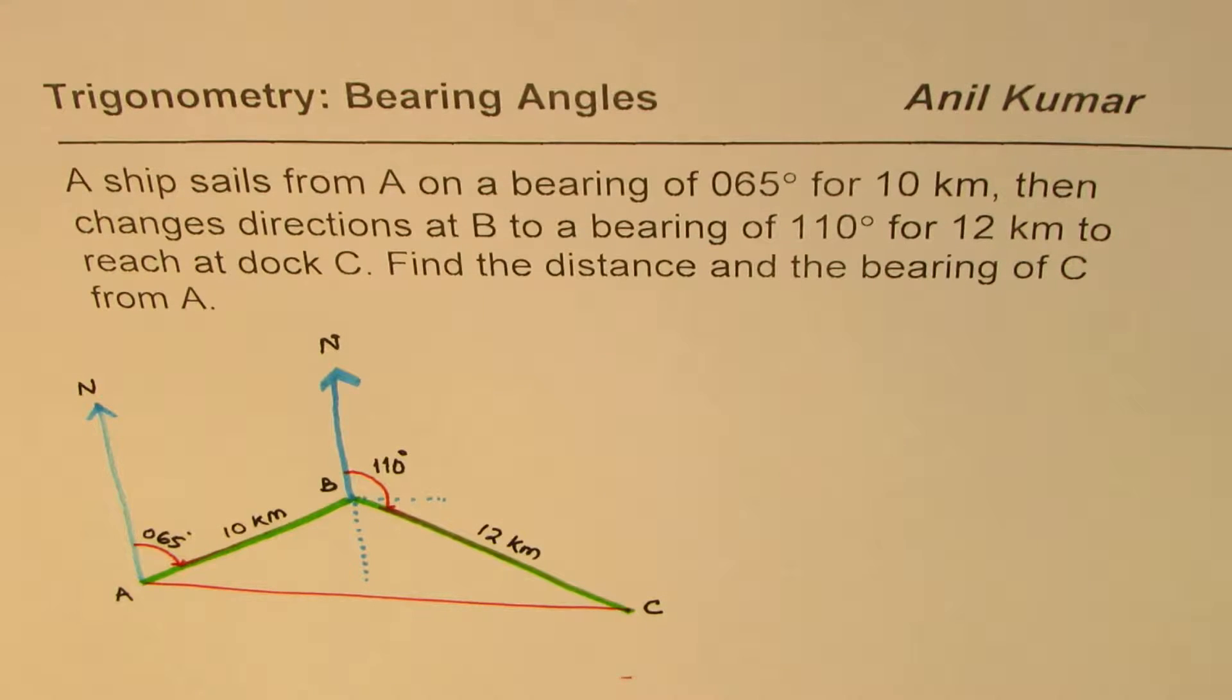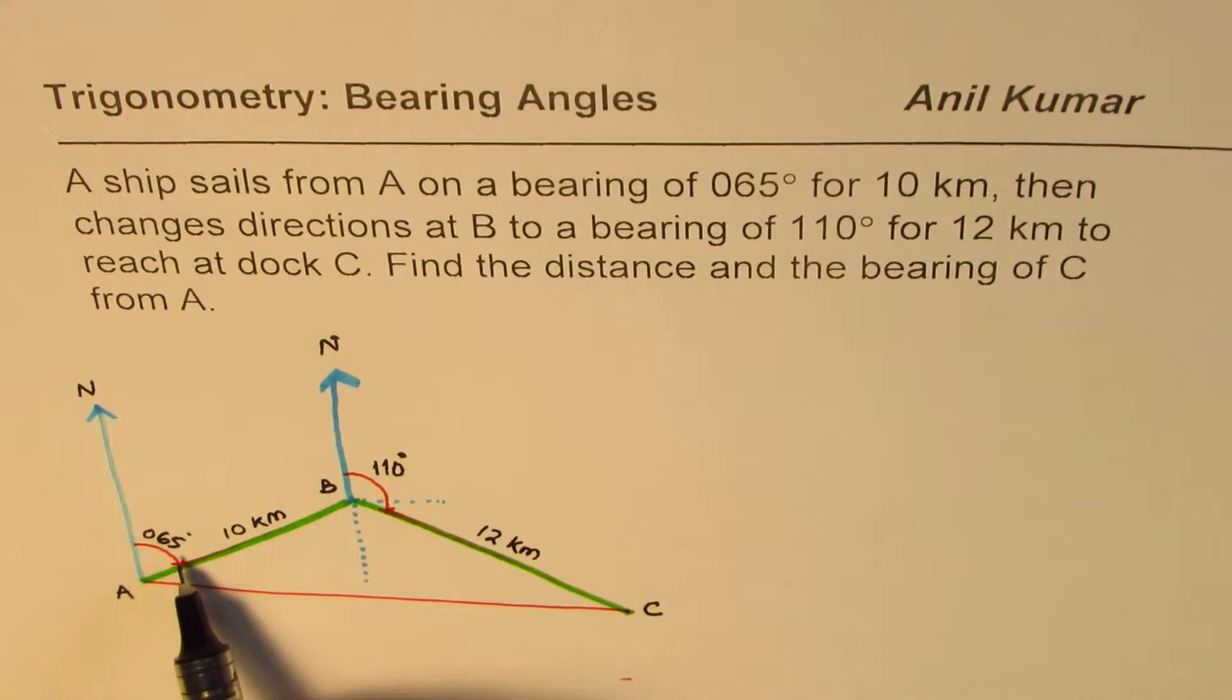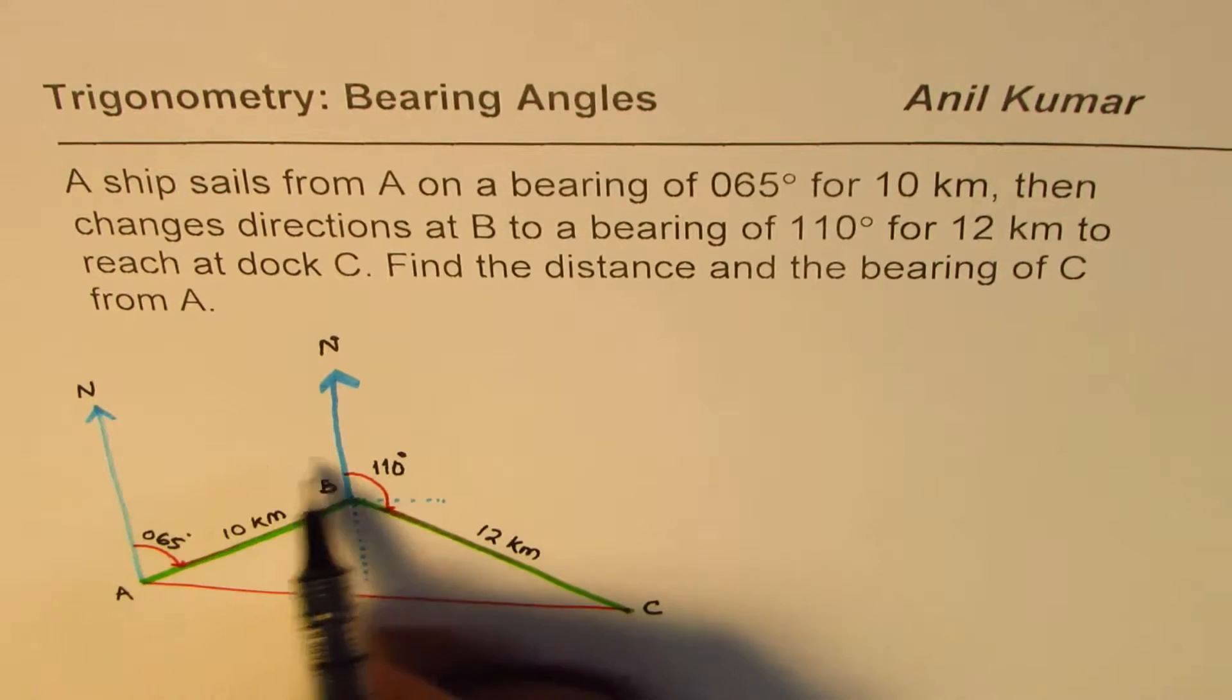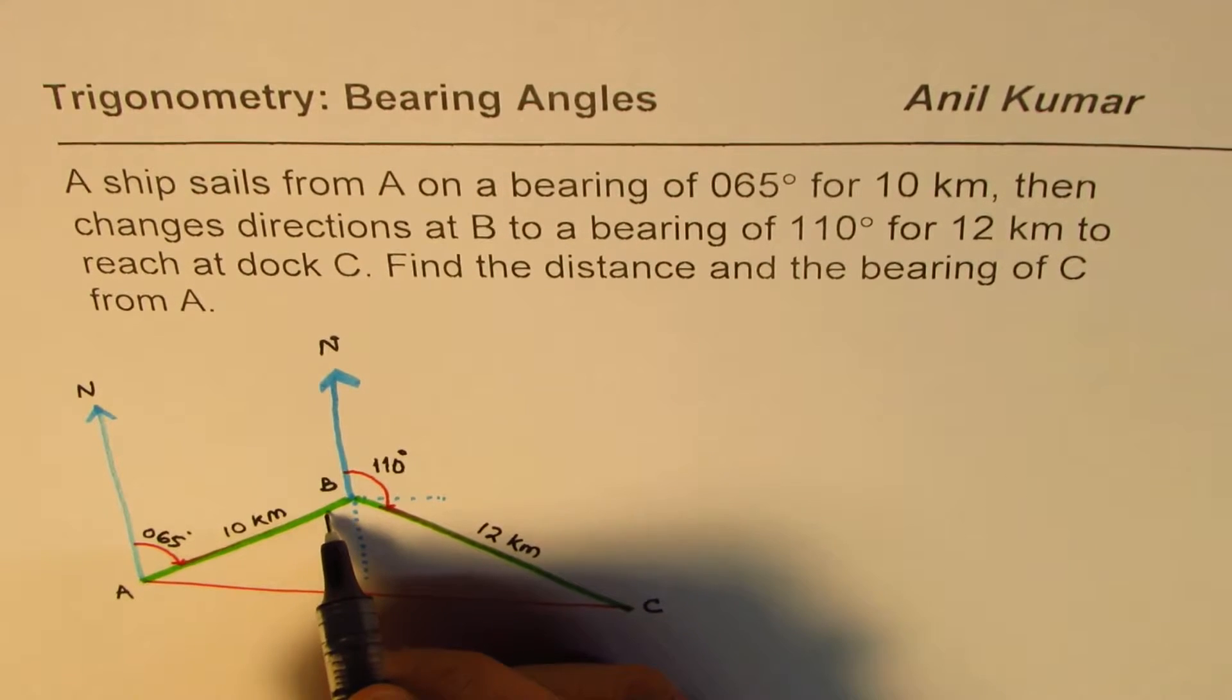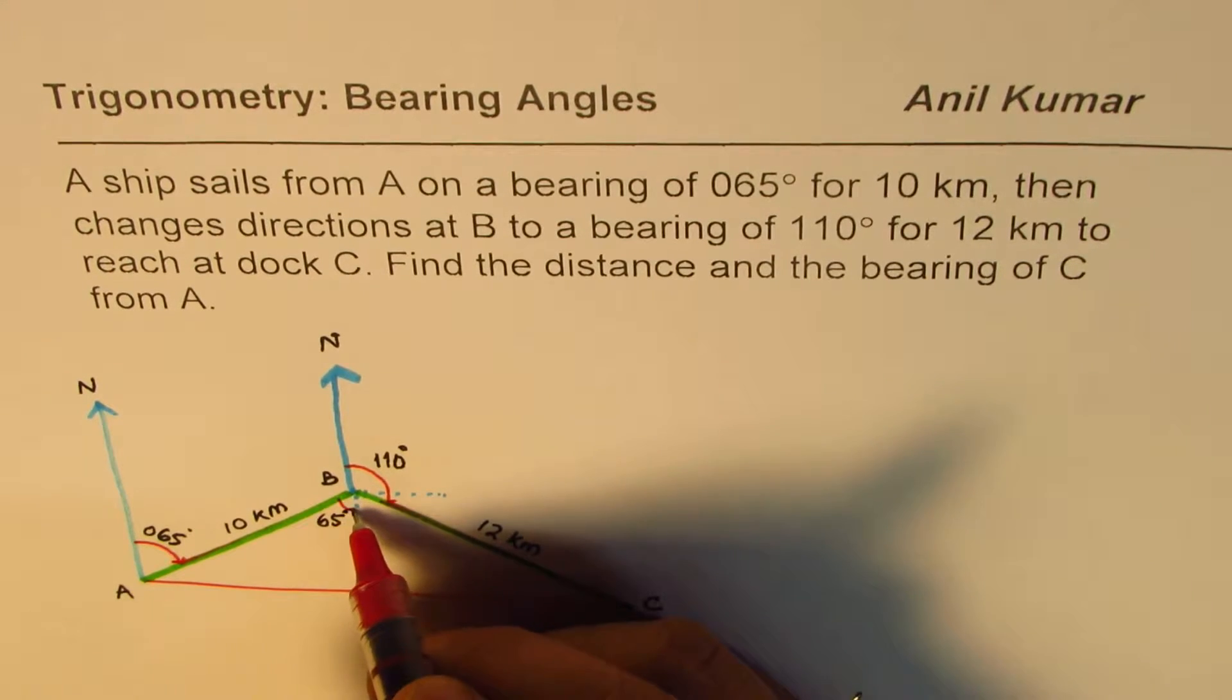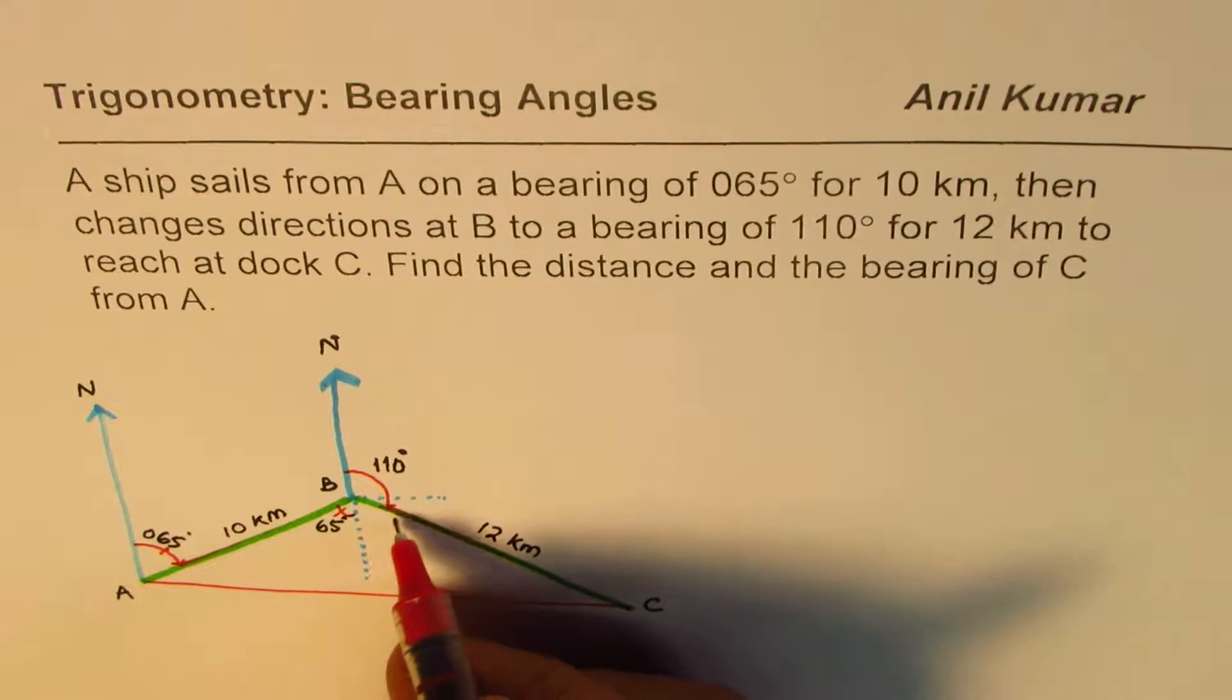The diagram I hope is absolutely clear. You can pause the video and answer the question and then look into my solution. If we look into this diagram, we know that the angle 65 degrees from the north and these two norths are parallel. You can take AB as a transversal line, so this angle here should also be 65 degrees, alternate interior angles between parallel lines.